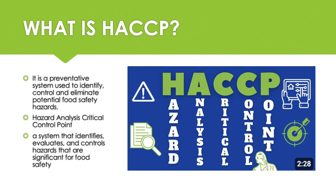A control point is a step in a process at which control can be applied, but where loss of control would not result in a risk to health. A critical control point is a step in the process where it is essential to prevent or eliminate a food safety hazard or reduce it to an acceptable level. Steps where there are significant hazards that are critical — if not controlled, they could make the final product unsafe and cause harm to the consumer. Steps that are not critical, that is control points, are still important and require control. Critical steps need extra control through the HACCP system, and no further step in the process will control the hazard. The team must identify critical control points — these are points where the hazard must be controlled or it will present a risk to the end user.